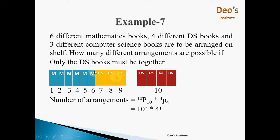The next sub-question: only the DS books must be together. The 4 DS books are treated as a single unit. The remaining books are 6 maths and 3 CS books — 9 individual books — plus 1 DS unit, giving 10 units total. These 10 units can be arranged by 10P10, that is 10 factorial. The DS books can be arranged amongst themselves by 4P4 ways. So total number of ways equals 10 factorial multiplied by 4 factorial.